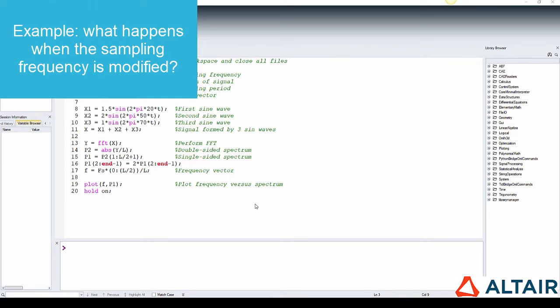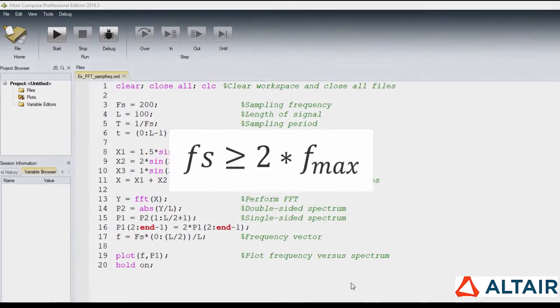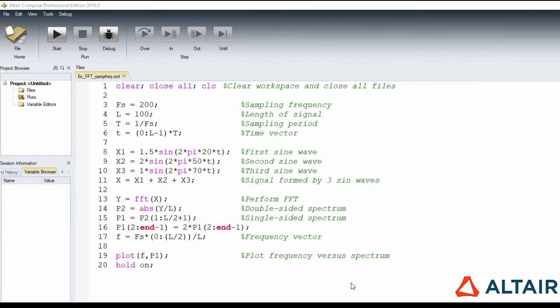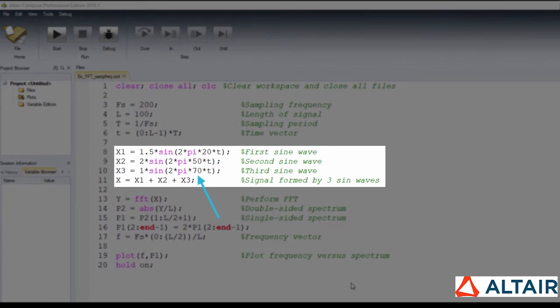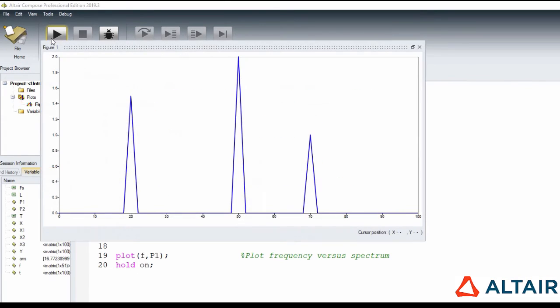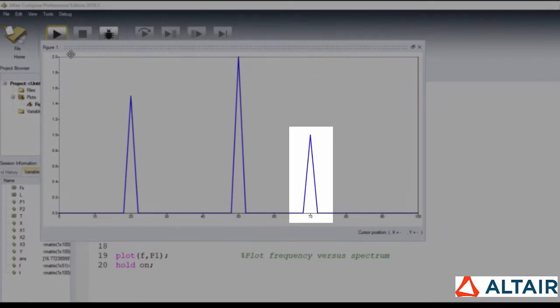Let's see now a third example, which will explore what happens when the sampling frequency is modified. According to the Nyquist theorem, the sampling frequency should be greater than two times the maximum frequency contained in the waveform. In this case, the maximum frequency is 70 Hz, and therefore the sampling frequency should be at least 140 Hz.